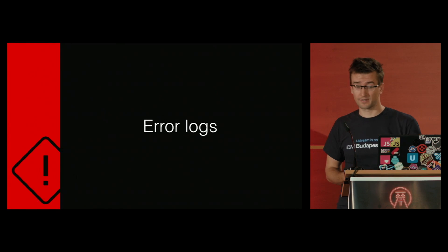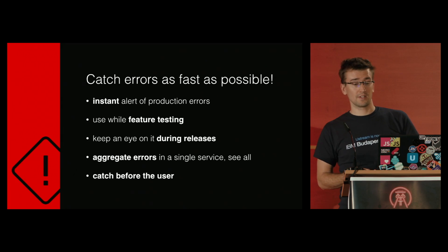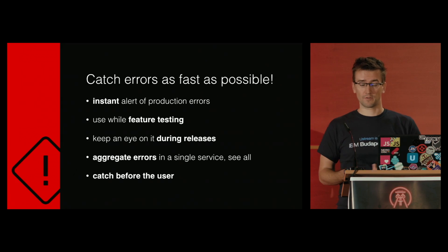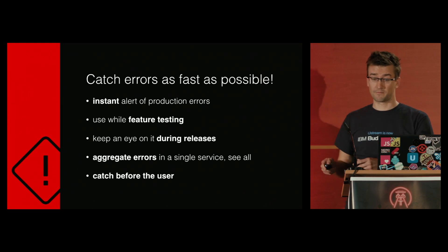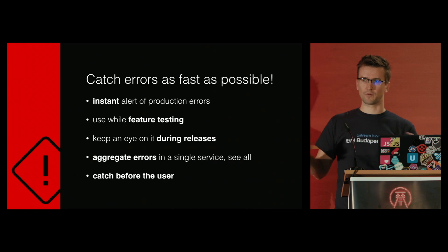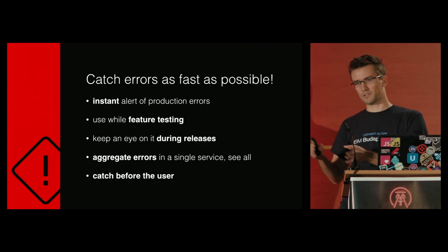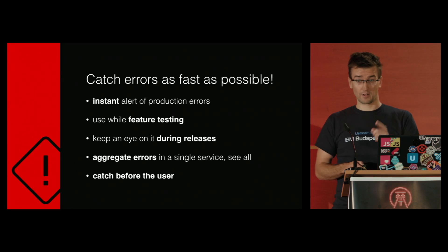Next: remote error logging. The goal here is to catch errors as fast as possible. Get alerts of errors in live production from services, see alerts during development, watch the error logs during feature testing and more importantly during releases. If you aggregate your incoming errors from all your services, you can see all these errors at the surface and may find the connection between them — which is the cause and which is the effect. Most importantly, you have to catch the error before the user does, because that will cost you and your company money.